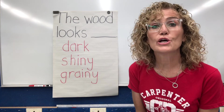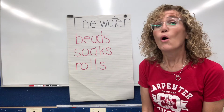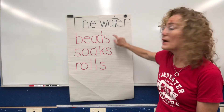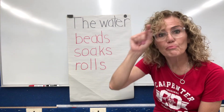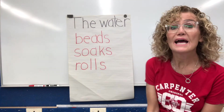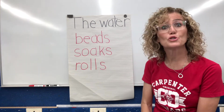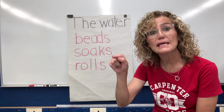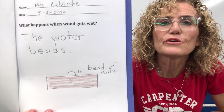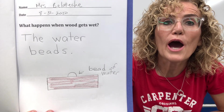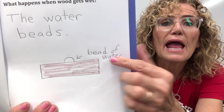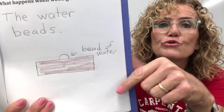One sentence you might want to have is 'The wood looks dark,' or 'The wood looks shiny.' Or you could write about the water. You could say 'The water beads' — do you remember when you saw that little bubble? That was a bead of water. You could say 'The water soaks into the wood,' because sometimes the water soaked in and sometimes it beaded up. You could say that the water rolls off. This is what I wrote: I wrote 'The water beads,' and then I drew a picture of the wood with the bead of water on top of it.